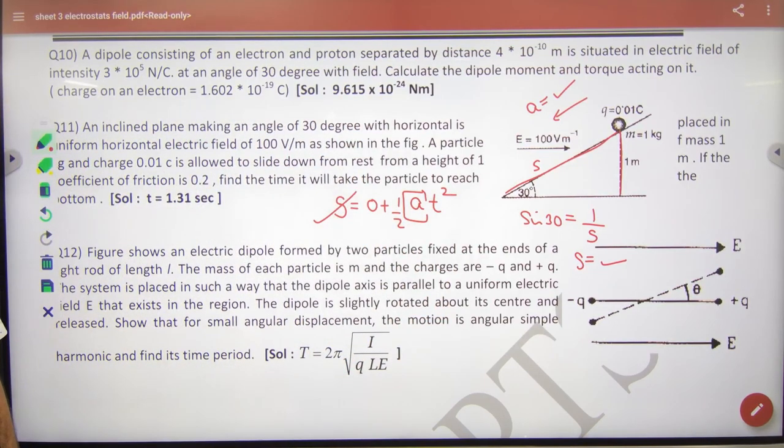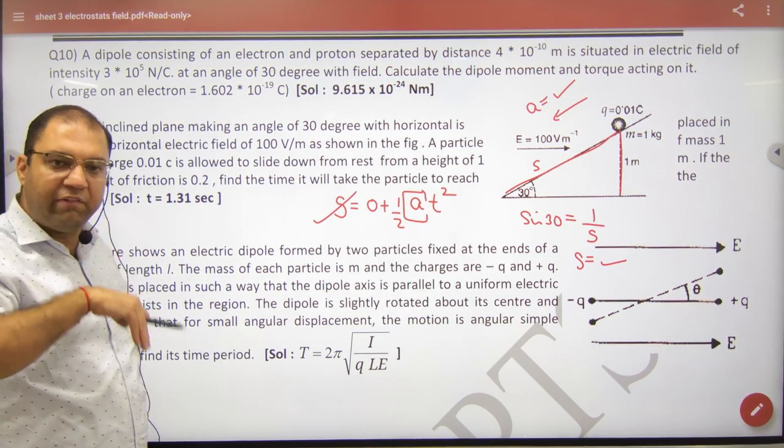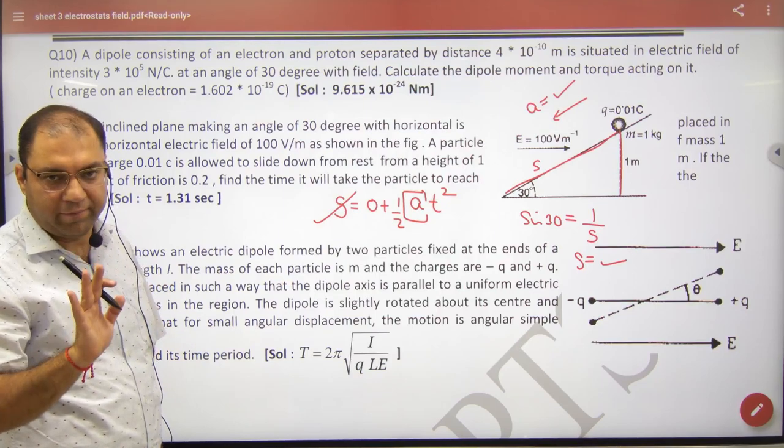So to remove acceleration, you have to remove net force because if we divide by mass the net force, then the acceleration will come. So let's go.